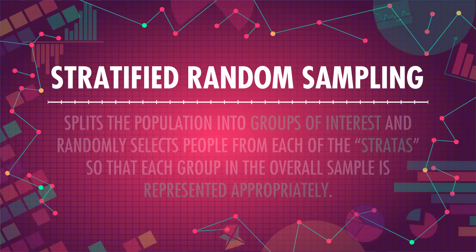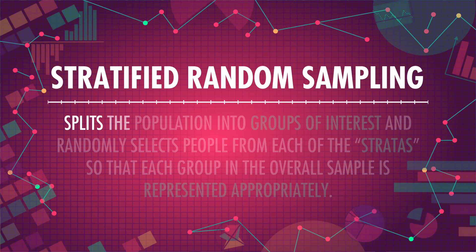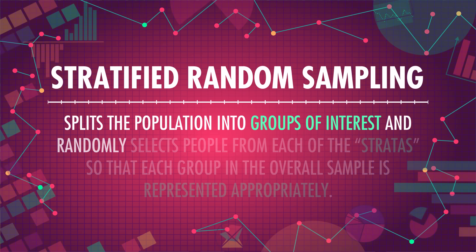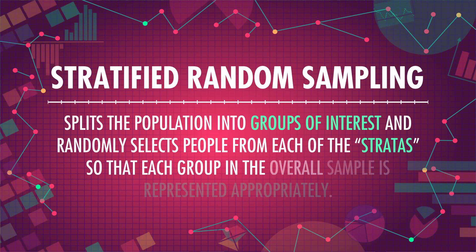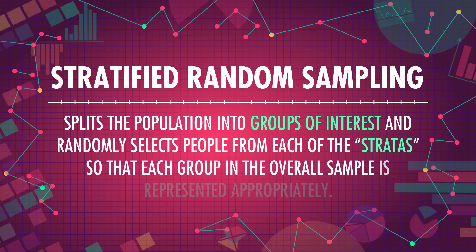Stratified random sampling is another option. It splits the population into groups of interest and randomly selects people from each of the strata so that each group in the overall sample is represented appropriately. For example, researchers have used stratified sampling to study differences in the way same-sex and different-sex couples parent their kids — randomly selecting people from each parenting group to make sure they're well-represented in the sample.